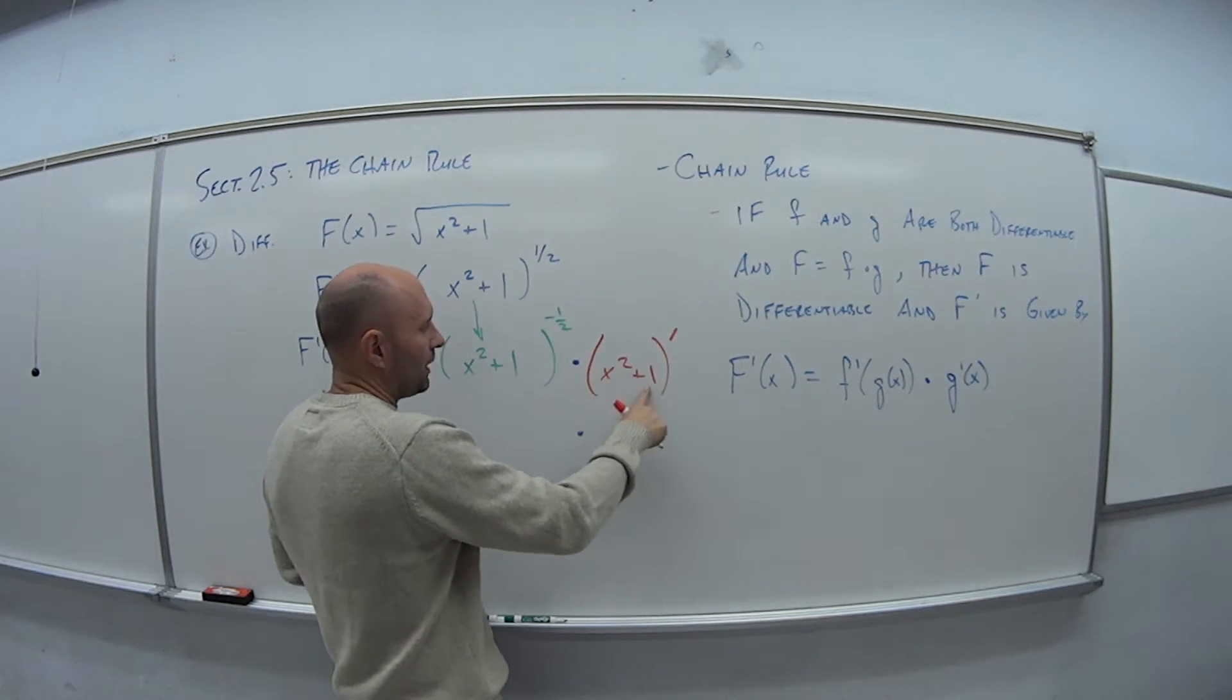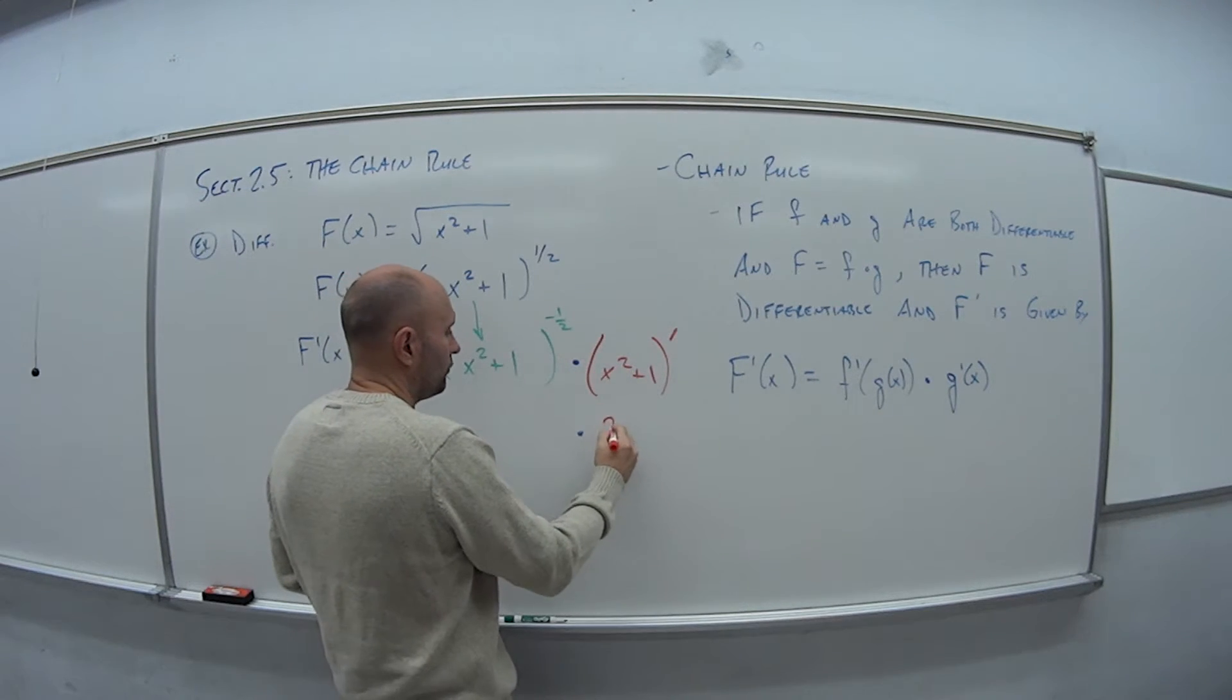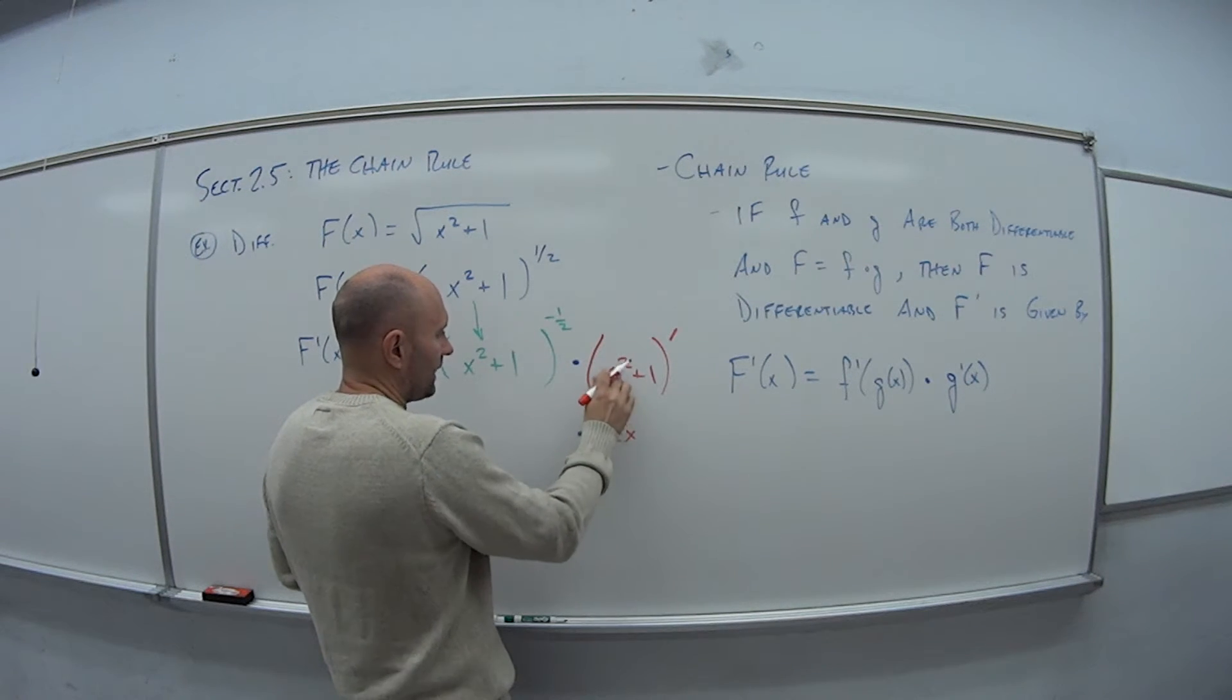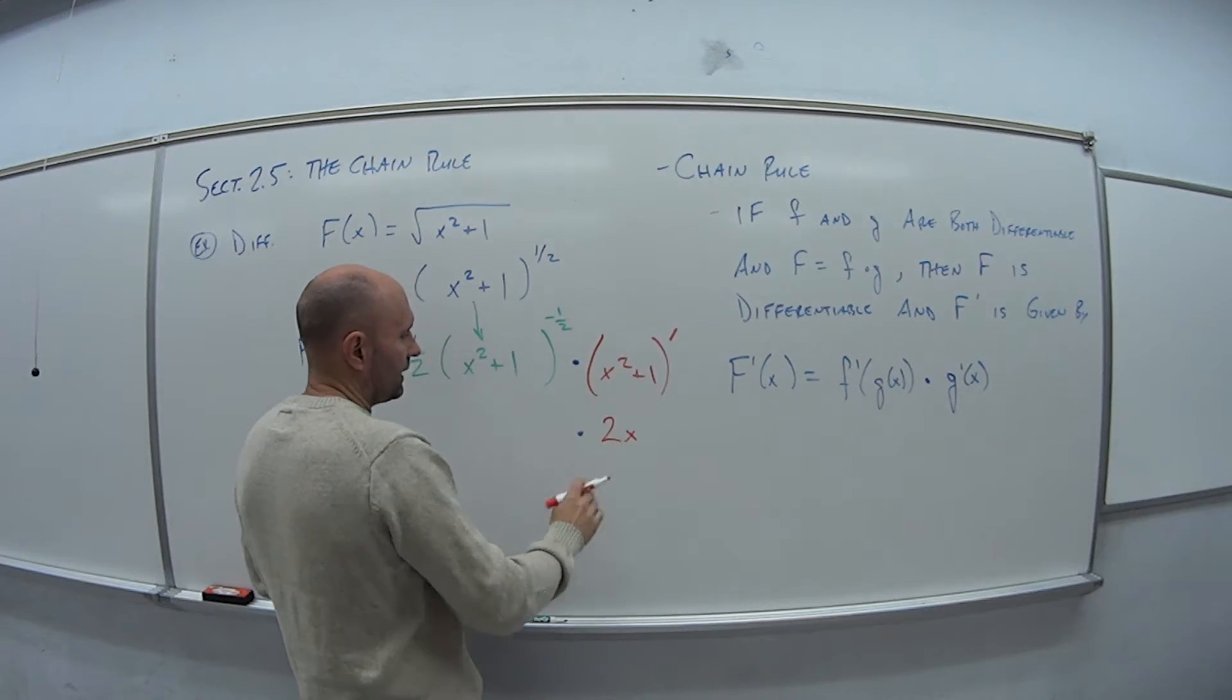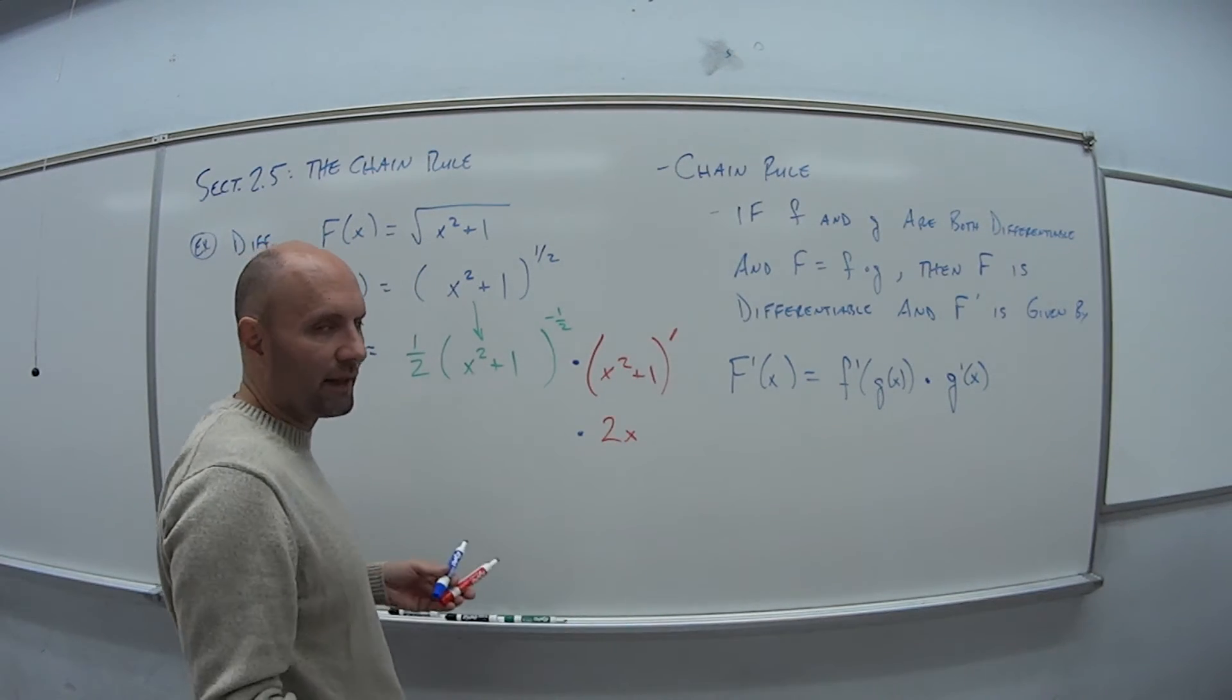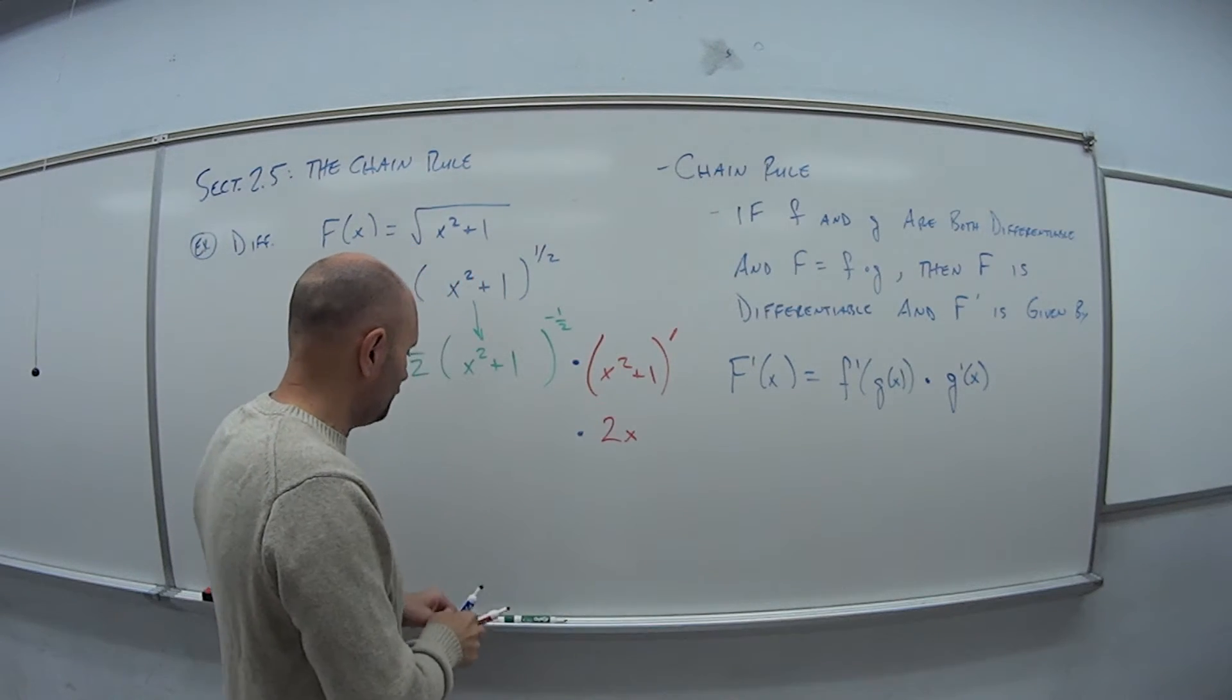So if I take the derivative of x squared plus one, well, what happens? All I'm doing is just a polynomial. So bring down the two, leave the x, subtract one, x to the first power, so the derivative of this guy is just 2x. And then that's it. I'm done. So I've done the two steps that I need to.